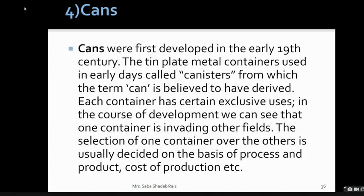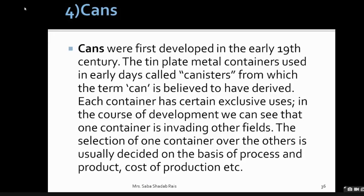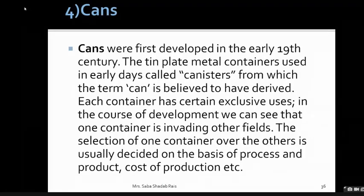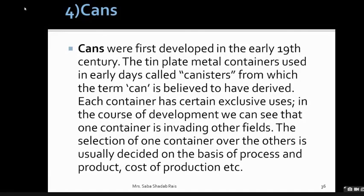The selection of one container over another is usually decided on the basis of three factors: process, product, and cost of production. For process, if cans are made of plastic they can be microwaved directly. For product, the type of product determines the type of can — you cannot use a plastic can for the long term like aluminium cans. For cost, if canning is very expensive it raises the final price of the fish, so all these factors must be carefully considered.